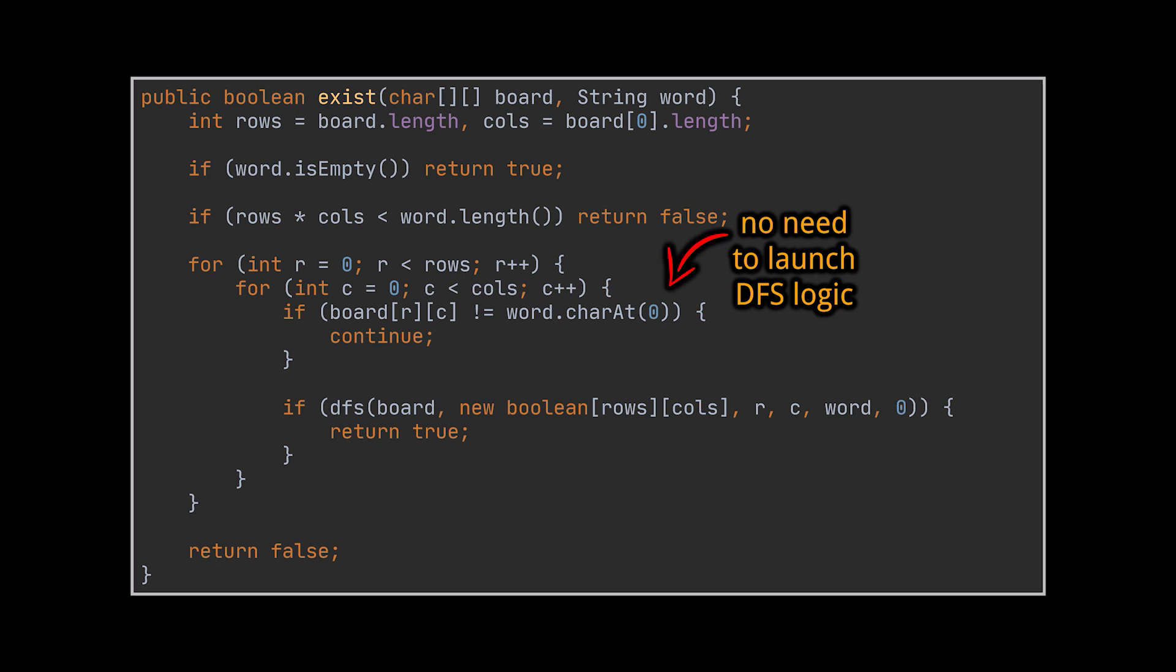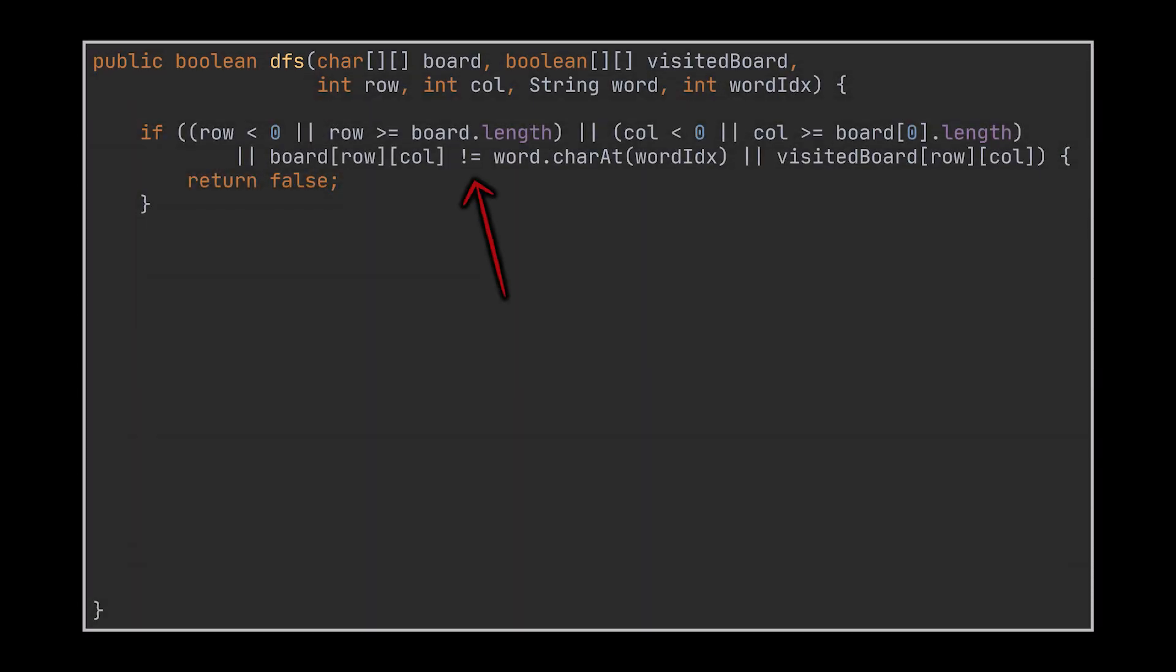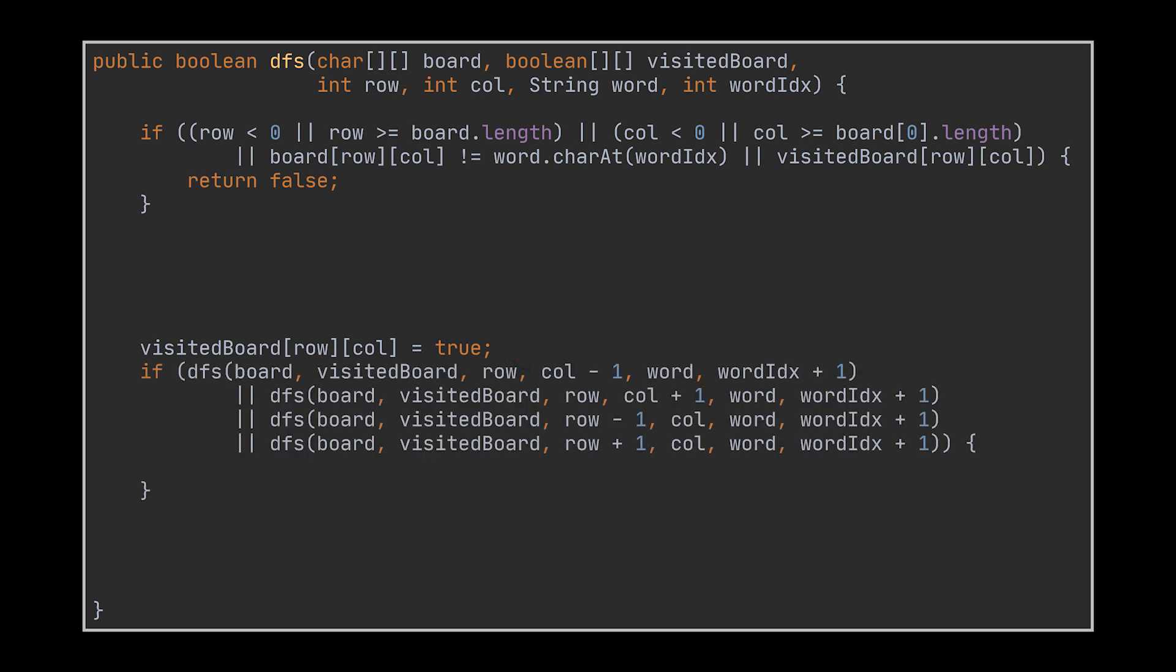Okay, to implement the DFS traversal algorithm we will start by checking if the current cell is within the bounds of the grid and if it matches the next character of the word. If it does, we mark the current cell as visited to avoid revisiting it and explore all four neighboring cells recursively.